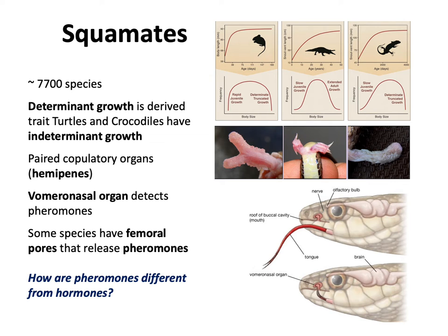How is a pheromone different from a hormone? They're basically the same thing, except hormones are designed to circulate through the body as a signaling molecule from one organ to another via the blood, whereas pheromones circulate through the air, water, or some other substance outside the animal. Hormones are intra-individual communication; pheromones are inter-individual or inter-specific communication.